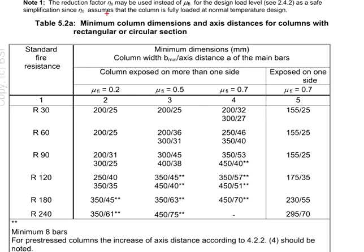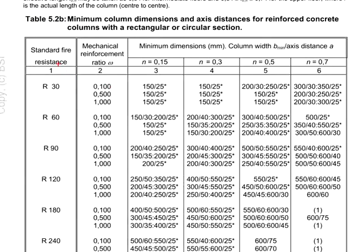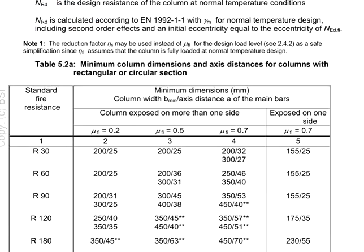To get the minimum column dimensions as well as the axis distance for the column, you may refer to either Table 5.2a or Table 5.2b. Both are applicable for rectangular and circular columns.